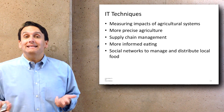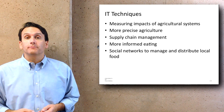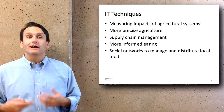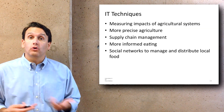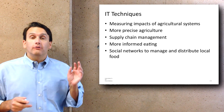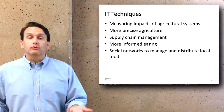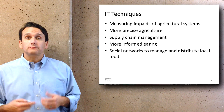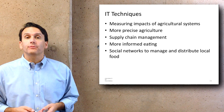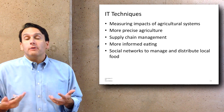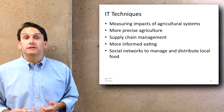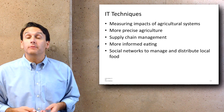There are a lot of IT techniques that are brought to bear in terms of modern agriculture: measuring the impacts of different agricultural systems, allowing for more precise control over inputs and outputs, enabling supply chain management of how food moves through the industrial infrastructure, allowing for more informed eating by knowing about caloric count and nutrition, and also potentially allowing social networks to manage and distribute local food supplies, such as community supported agriculture.